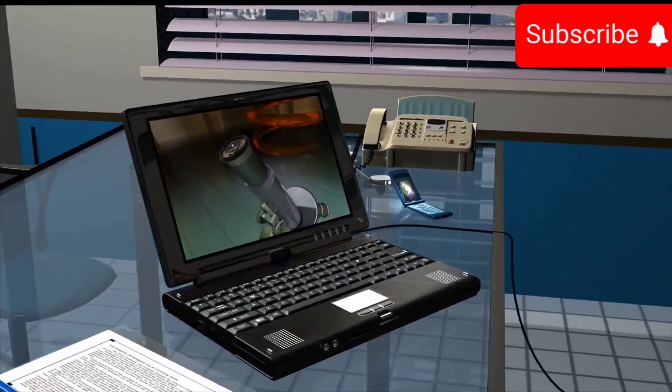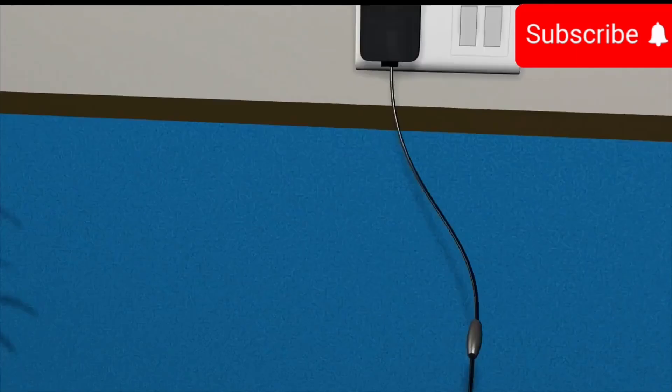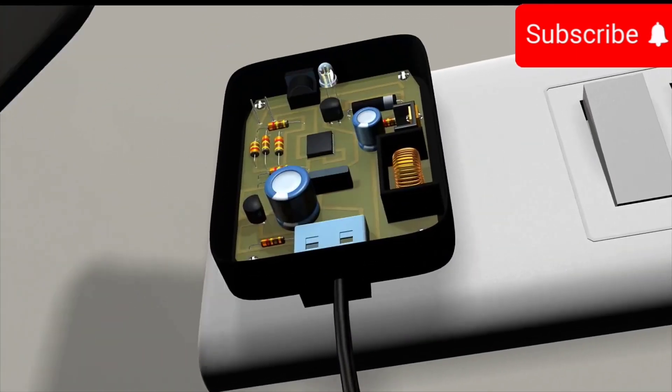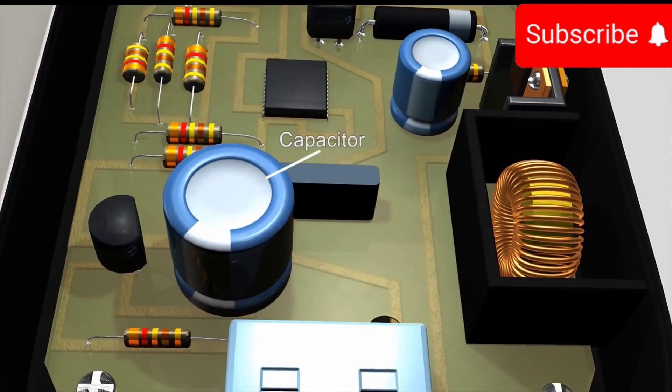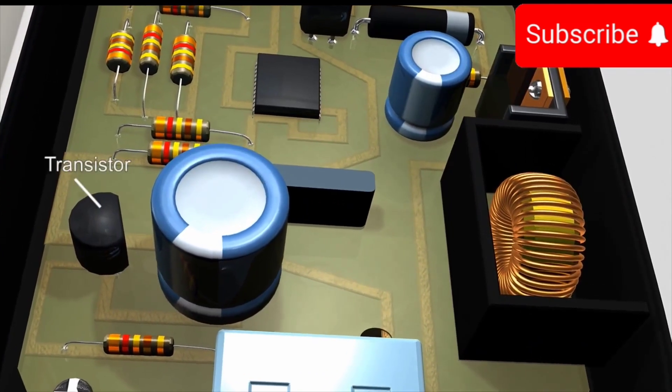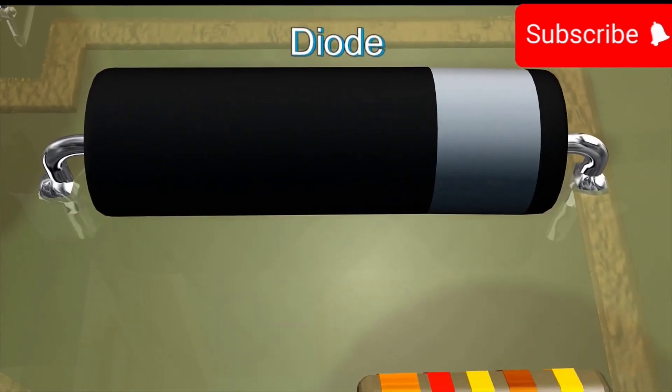Most electronic gadgets like laptops, mobile phones and chargers consist of a circuit board. There are several minute components like capacitor, transistor and resistors on these boards. One such component is called Diode.